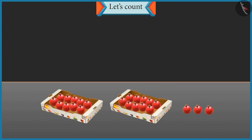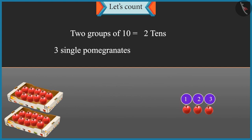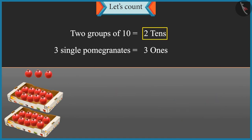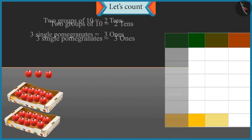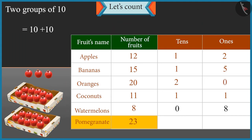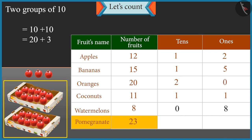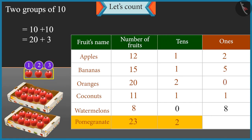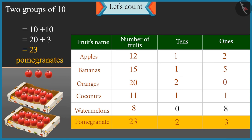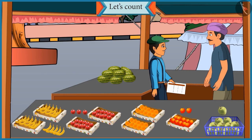Chotu, I have counted the pomegranates and placed them in the groups of tens. Can you tell me how many pomegranates are there? Uncle, there are two groups of tens, that means two tens, and three single pomegranates, that means three ones. So it will be ten and ten — twenty — and there are three more pomegranates, so twenty-one, twenty-two and twenty-three. There are twenty-three pomegranates. Absolutely right.